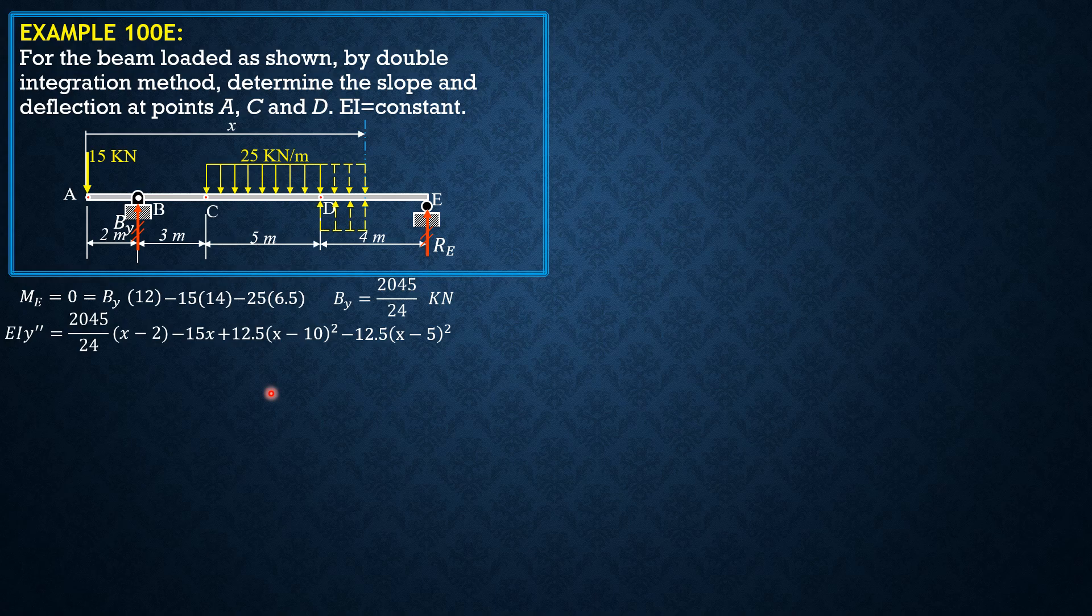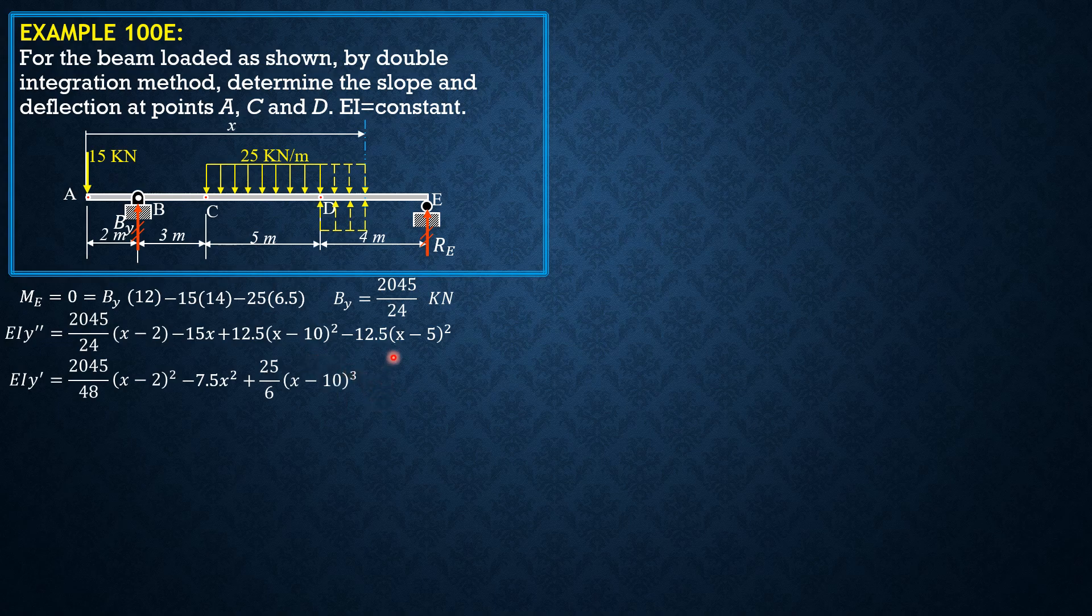Integrating once, EI Y prime equals 2045 over 48 times (X minus 2) squared minus 7.5X squared plus 25 over 6 times (X minus 10) cubed minus 25 over 6 times (X minus 5) cubed plus C sub 1. This is the equation for slope.